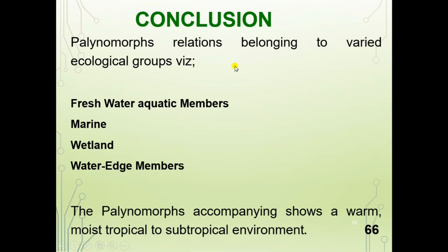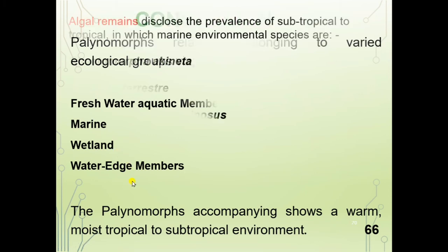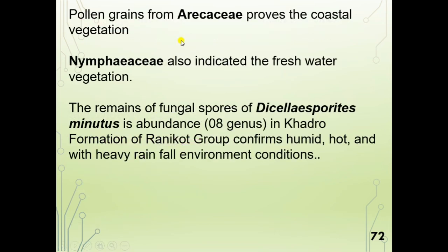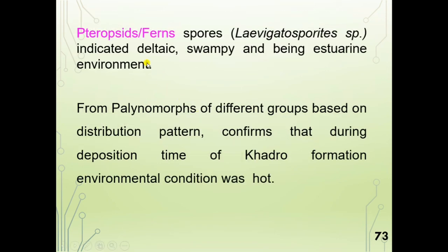Palynomorphs belonging to varied ecological environments such as freshwater, marine, wetland, and water-edge environments were found. Algal remains show different environments — marine and freshwater. Pollen grain of Araceae proves coastal vegetation. Nymphaeaceae shows freshwater vegetation, and Dicellasporites fungus indicates a hot humid environment with heavy rainfall. Fern spores indicate an estuarine environment, confirming the Kherdo Formation was deposited in a hot environment.